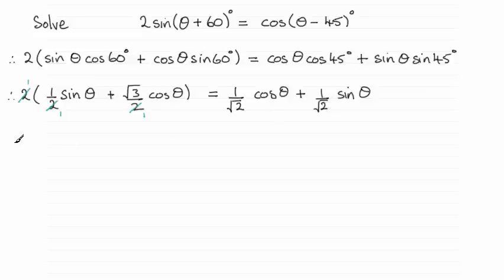times sin θ, plus √2 times √3 (so that's √6) times cos θ. That's going to equal, on this side, just cos θ + sin θ.